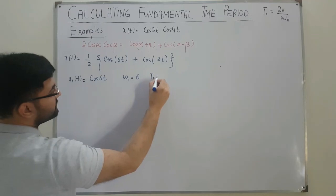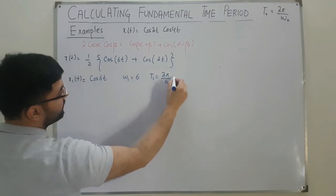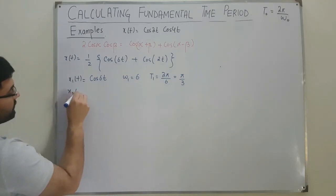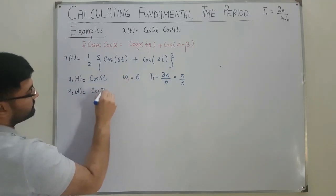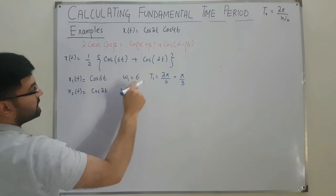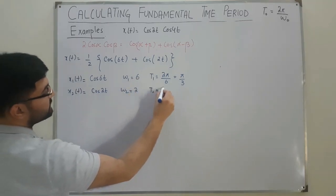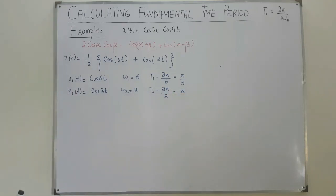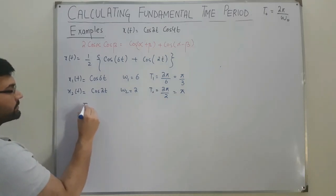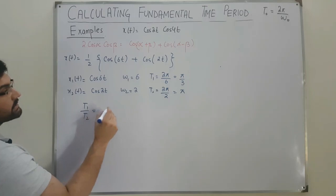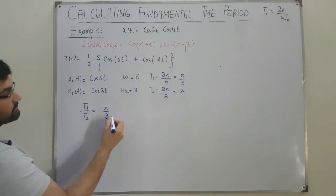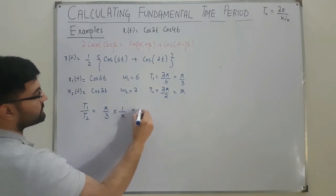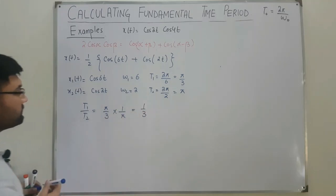So T1 = 2π/6 = π/3. Similarly, x2(t) = cos(2t), so ω2 = 2 and T2 = 2π/2 = π. Now we find the ratio T1/T2 = (π/3)/π = 1/3.